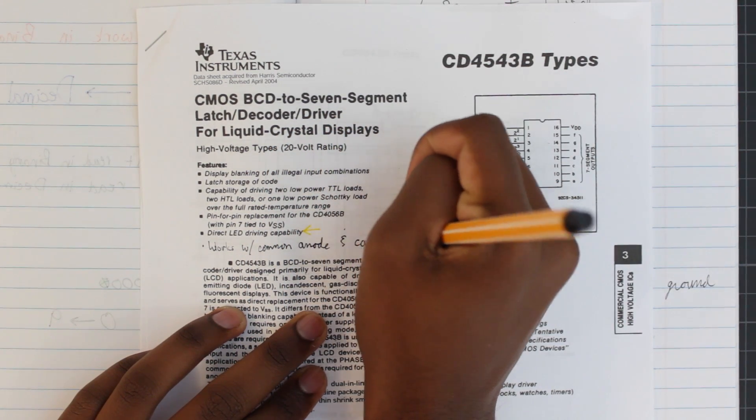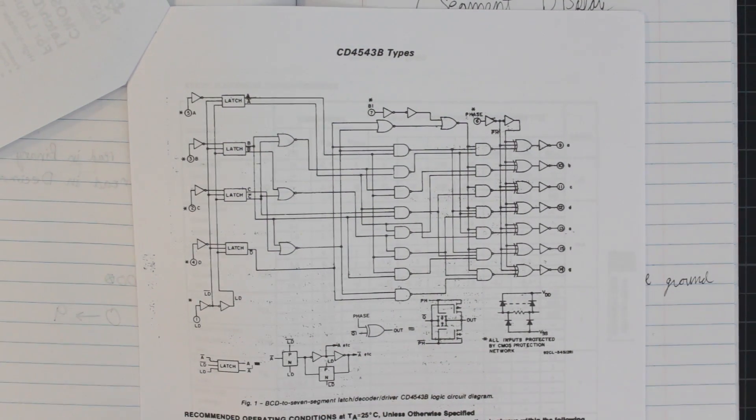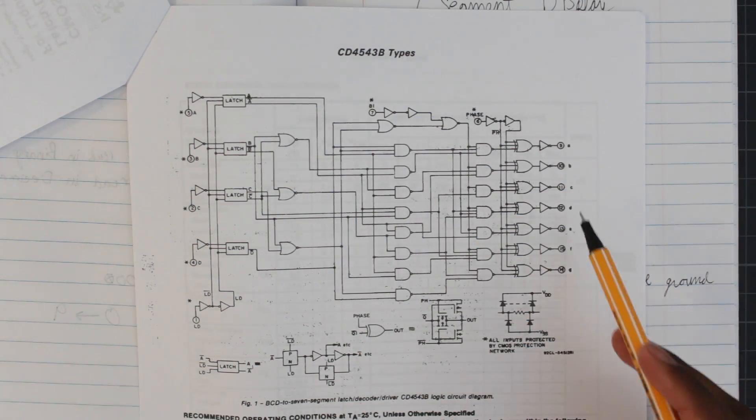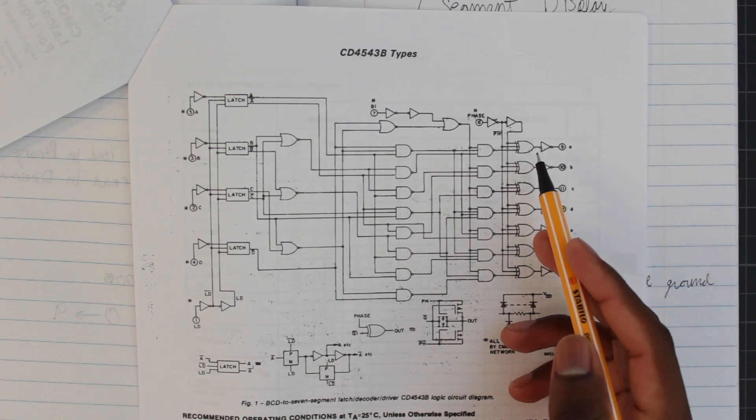You can choose which one you want by changing pin 6. Now, looking at the internal circuitry of this chip, you can understand why I didn't want to build this chip from scratch. For one, it's worthlessly complicated, especially since it only converts 4 bits and not even 8 bits, which is what we need.